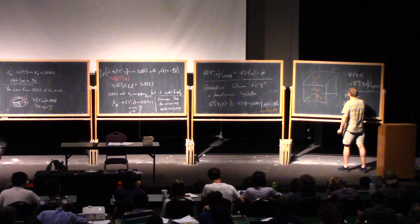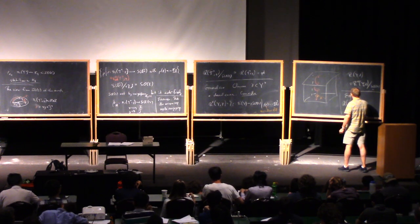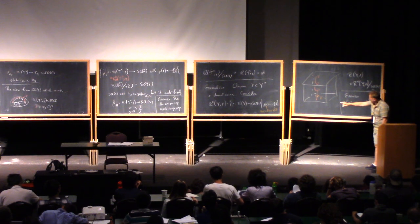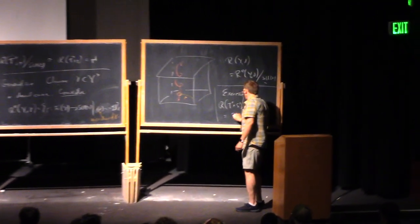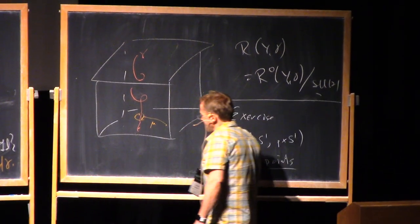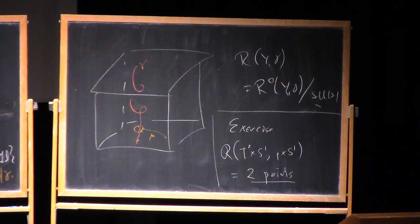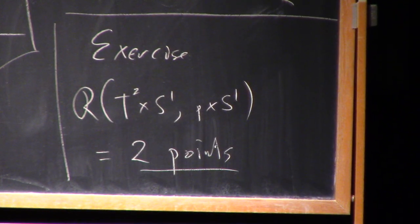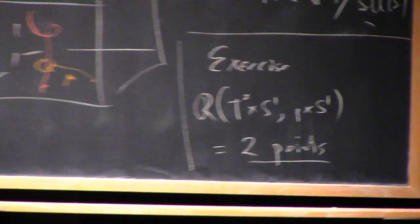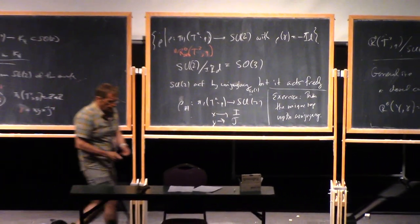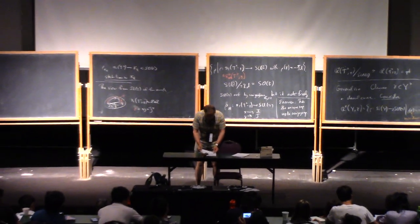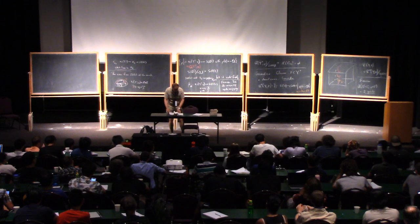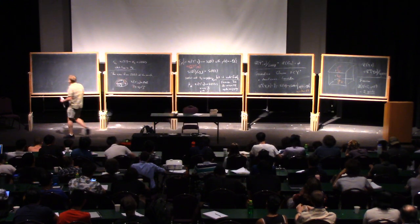Exercise: R₀ of (T²×S¹, point×S¹) — that's the three-torus with a curve — is two points. That's the sort of elementary exercise to make sure you understand the definitions. I'm going to give you a richer family of examples, which is a beautiful computation due to Fintushel and Stern: Seifert fibered spaces.